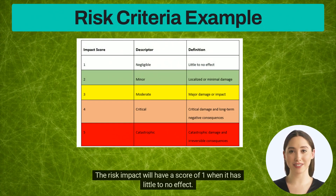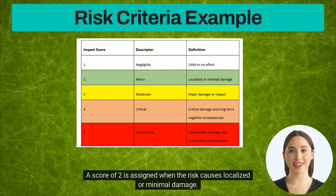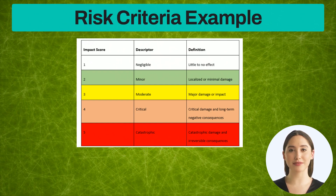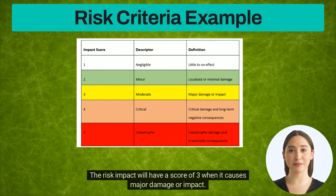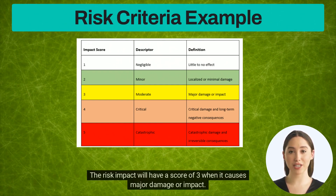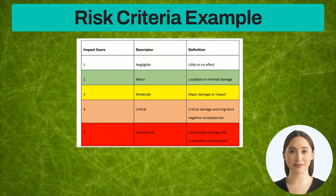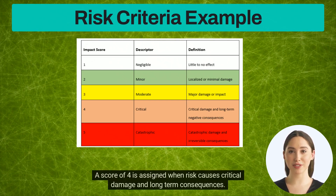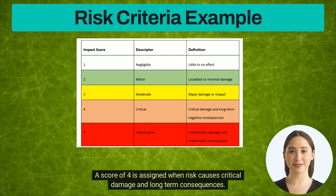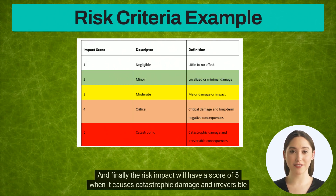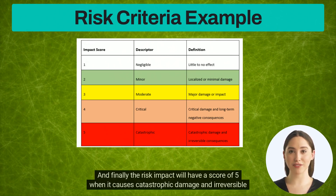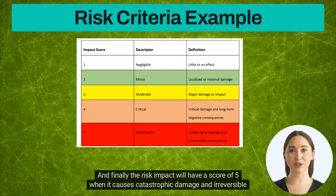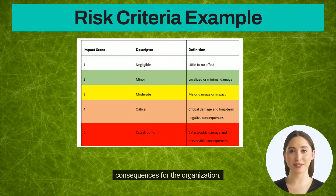The company uses the following criteria to rate the impact of risk. The risk impact will have a score of one when it has little to no effect. A score of two is assigned when the risk causes localized or minimal damage. The risk impact will have a score of three when it causes major damage or impact. A score of four is assigned when the risk causes critical damage and long-term consequences. And finally, the risk impact will have a score of five when it causes catastrophic damage and irreversible consequences for the organization.